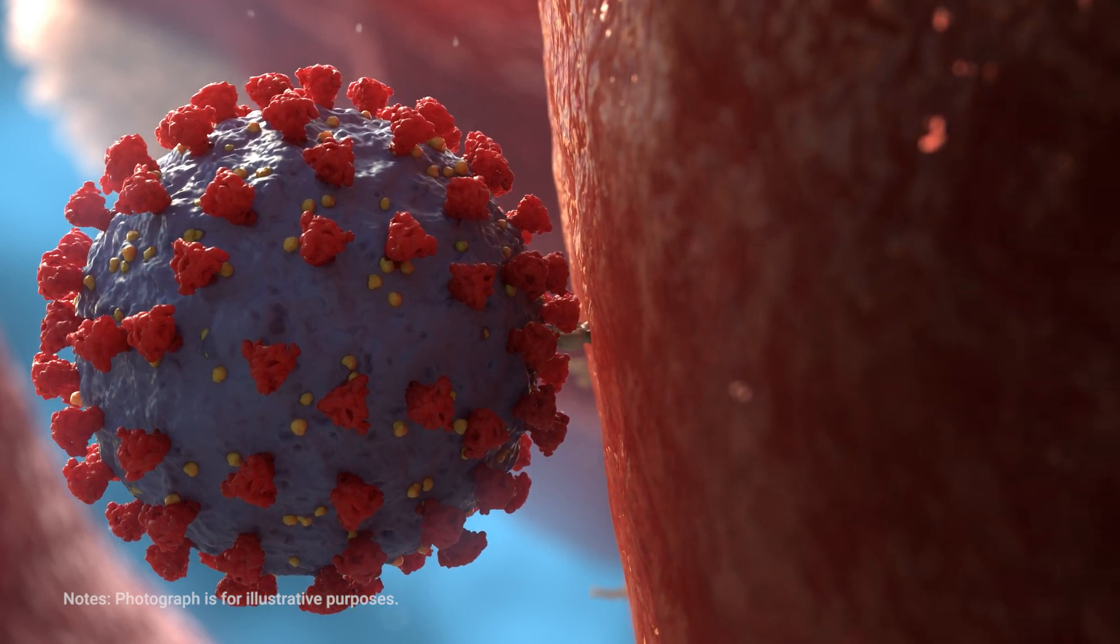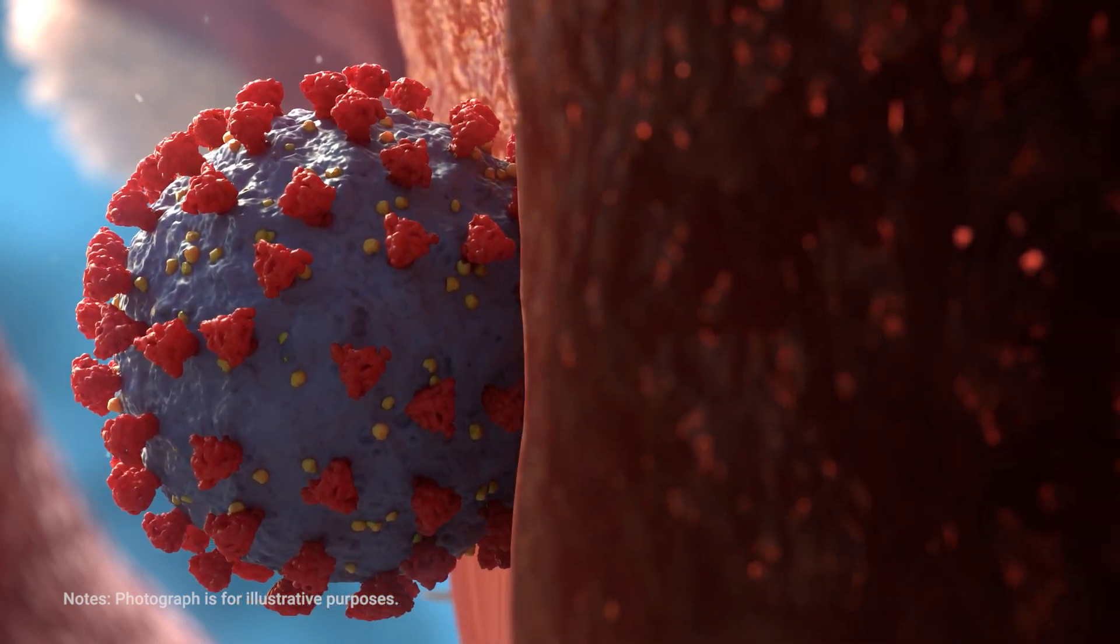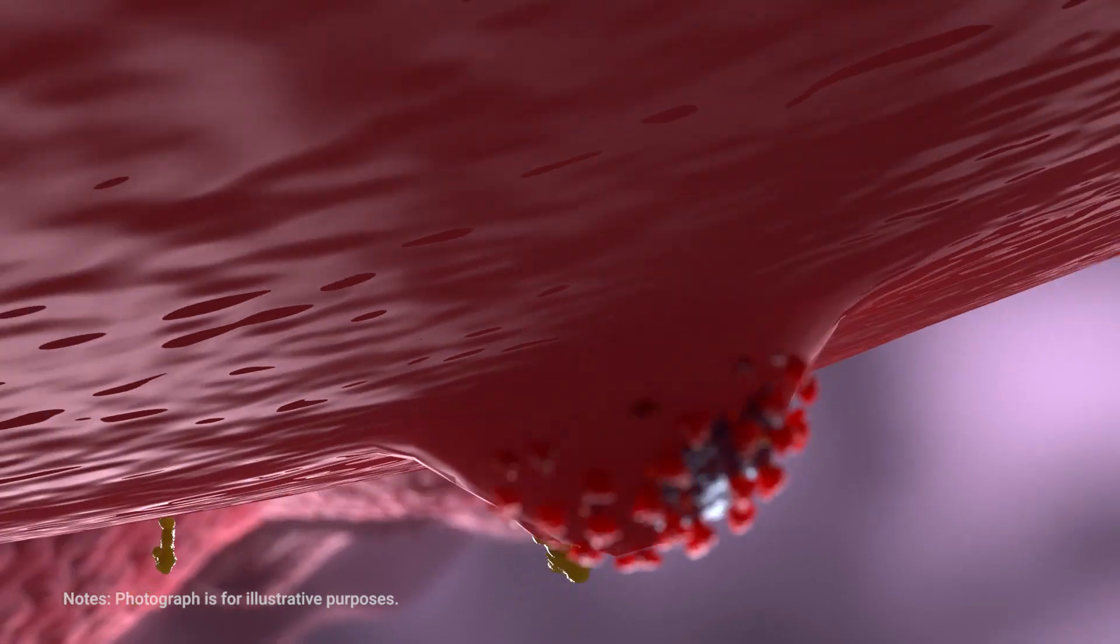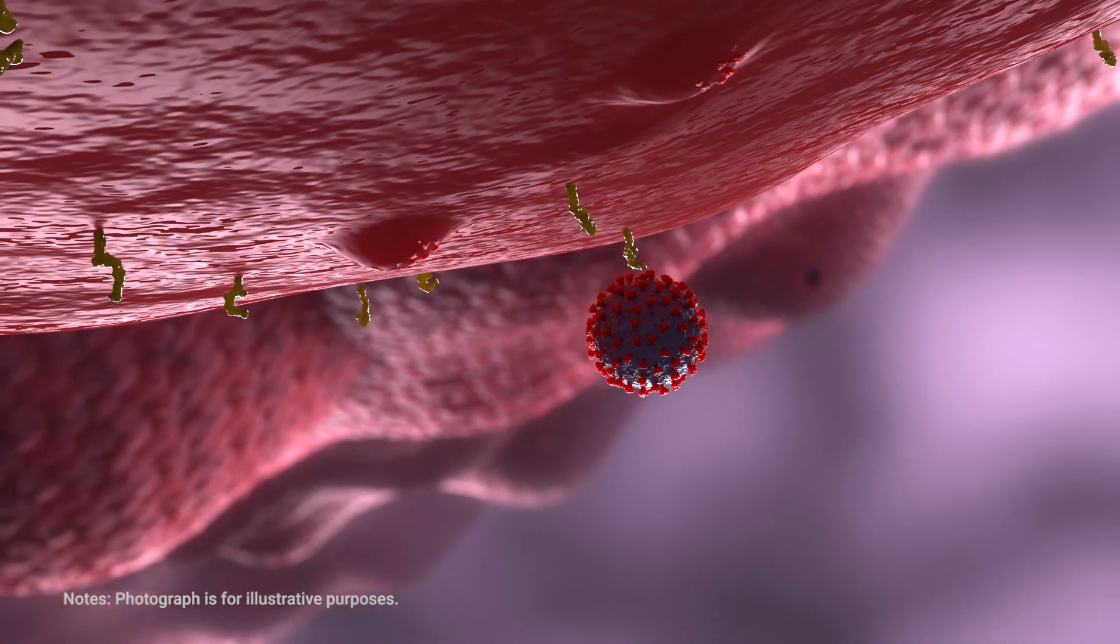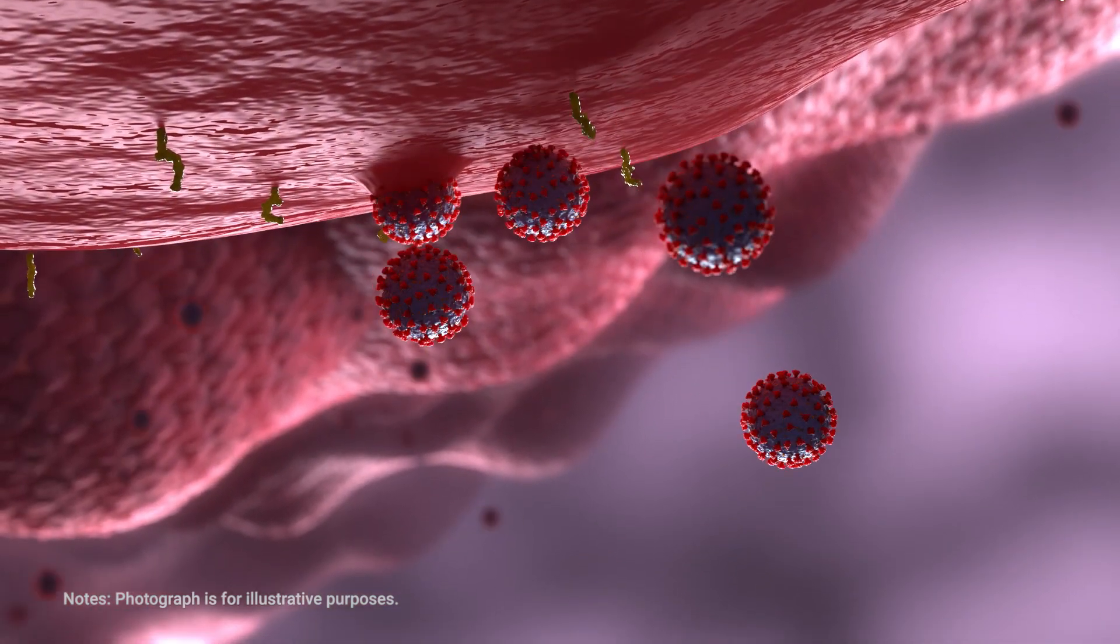Once inside the body, the virus enters the cells of the respiratory system using its crown-like projections. It repeatedly invades other cells and proliferates dramatically.